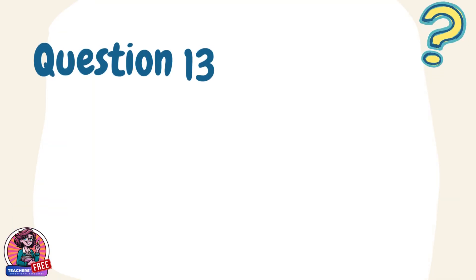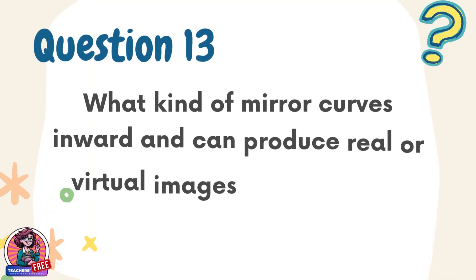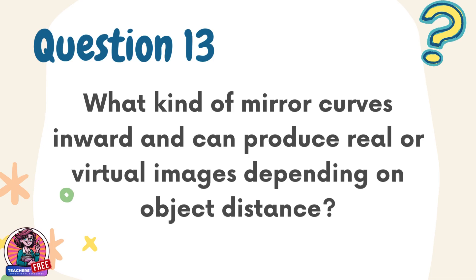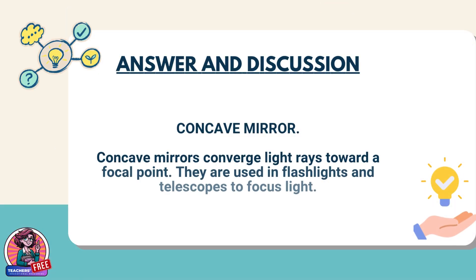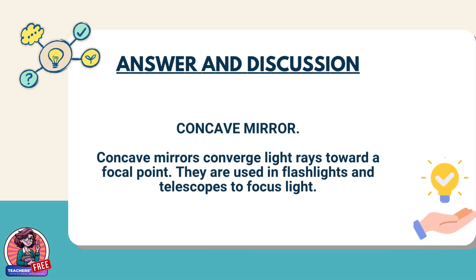Question 13. What kind of mirror curves inward and can produce real or virtual images depending on object distance? Answer: concave mirror. Concave mirrors converge light rays toward a focal point. They are used in flashlights and telescopes to focus light.